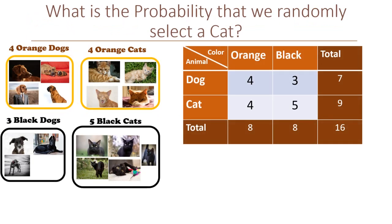Okay, let's start. What is the probability that we randomly select a cat? To find the answer to this question, let's count the number of cats that we have. We have 4 orange cats and 5 black cats, making 9 total cats out of 16 pets. So the probability that we randomly select a cat is 9 over 16.